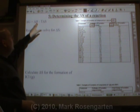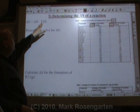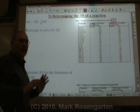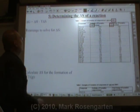We know the delta H. We know the temperature. We know the delta G. We need to find delta S if it's not given to us, and here's how it's done.